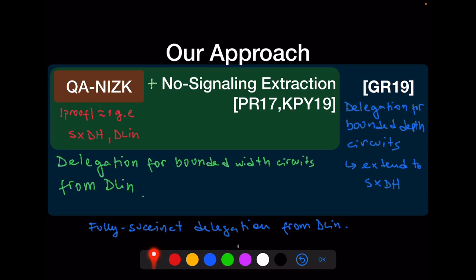The important ingredient is what is called non-signaling extraction. Using quasi-arguments with this non-signaling extraction, you can get delegation for bounded-width circuits. They also extend their work for general circuits, but the problem is that the proof is not fully succinct — it is not a constant number of group elements — and the assumption is not constant size. So we construct new quasi-arguments based on QA-NIZK so that they inherit the short proof size and the good assumption, managing to get fully succinct delegation for bounded-width circuits from DLIN.